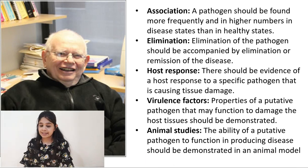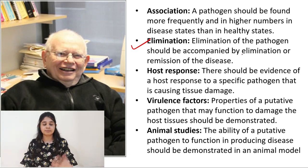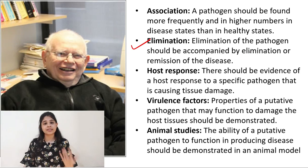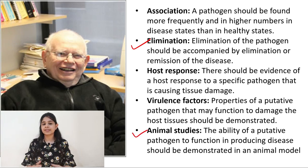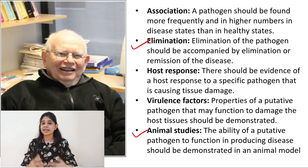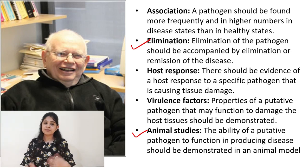Over the years it has been seen that Socransky's postulates are not 100% true and have certain drawbacks. For example, 100% elimination of any periodontal pathogen is impossible — any treatment cannot eliminate microorganisms present deep in the periodontal pocket. Many of the microorganisms are also indigenous commensals present in the healthy state as well, so complete elimination does not really hold good. Regarding animal studies, experimental evidence shows varied degrees of success: when Porphyromonas gingivalis was inoculated in mice, certain mice developed periodontal disease whereas others did not.